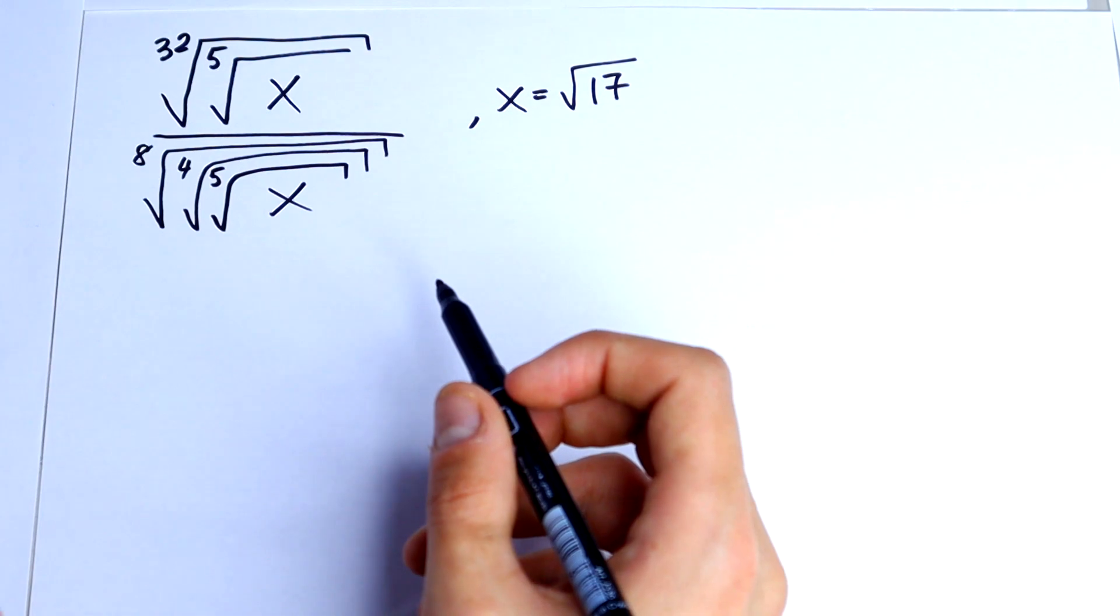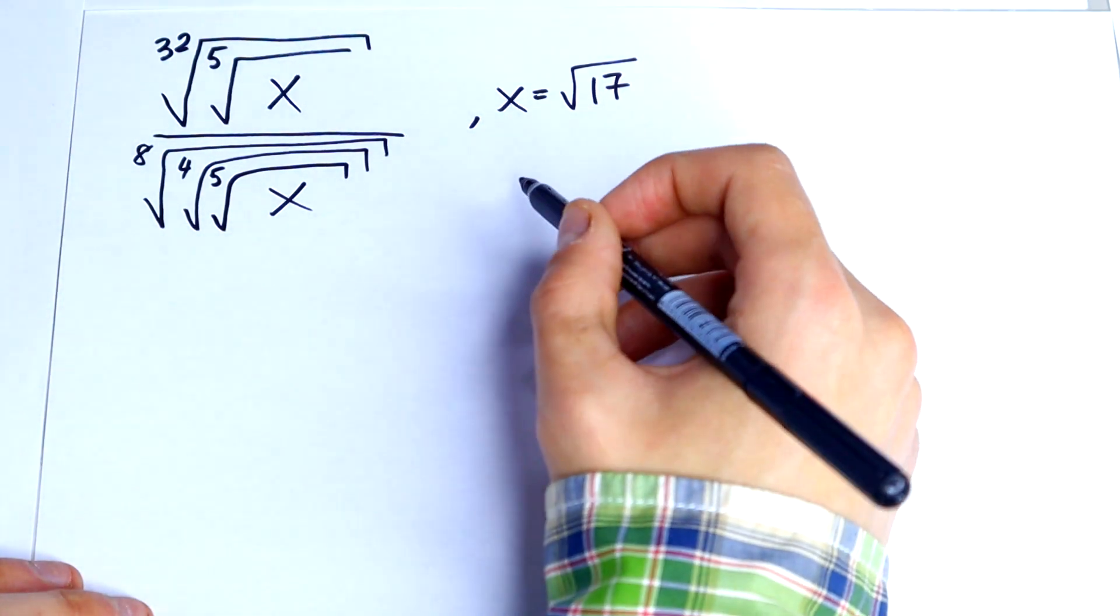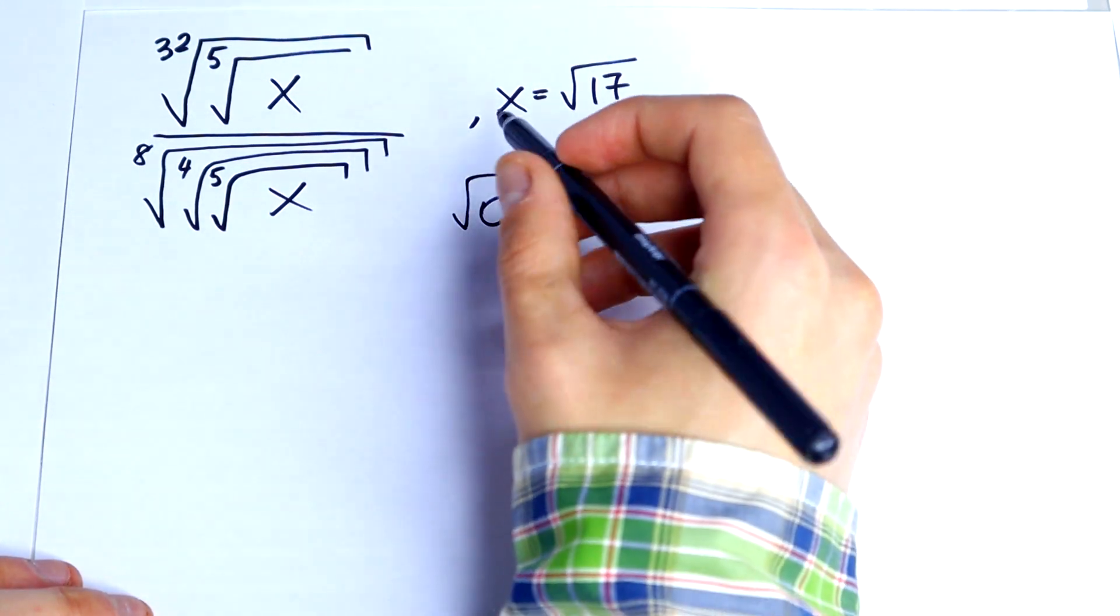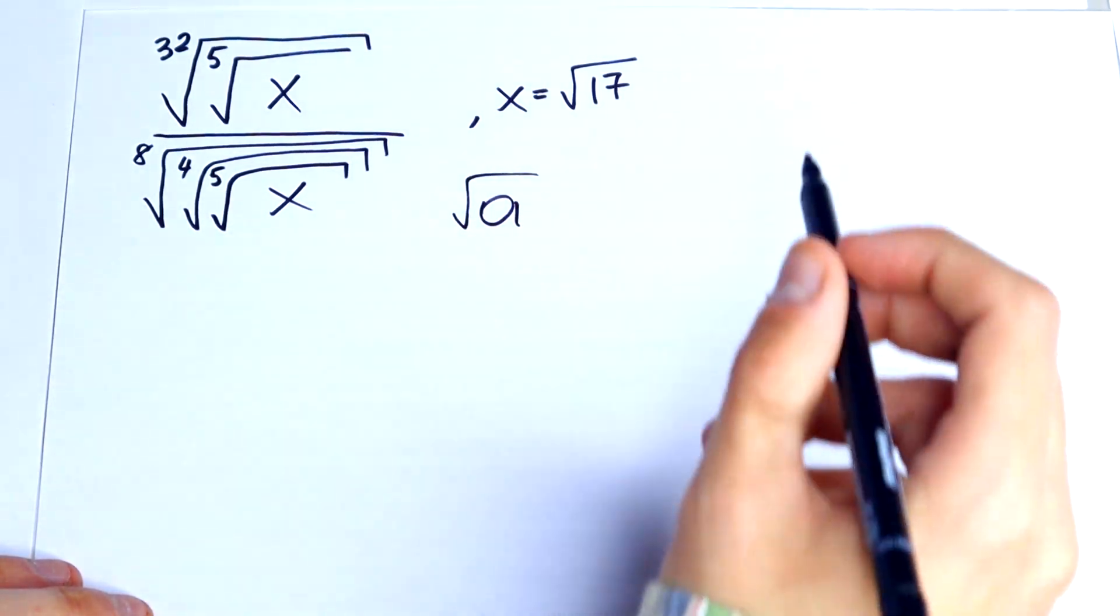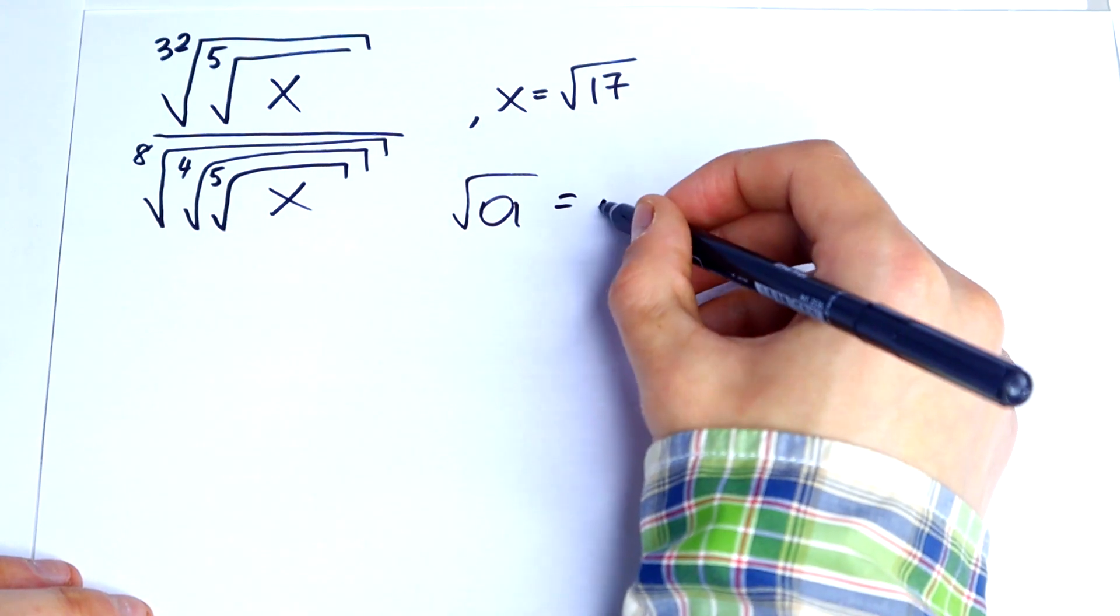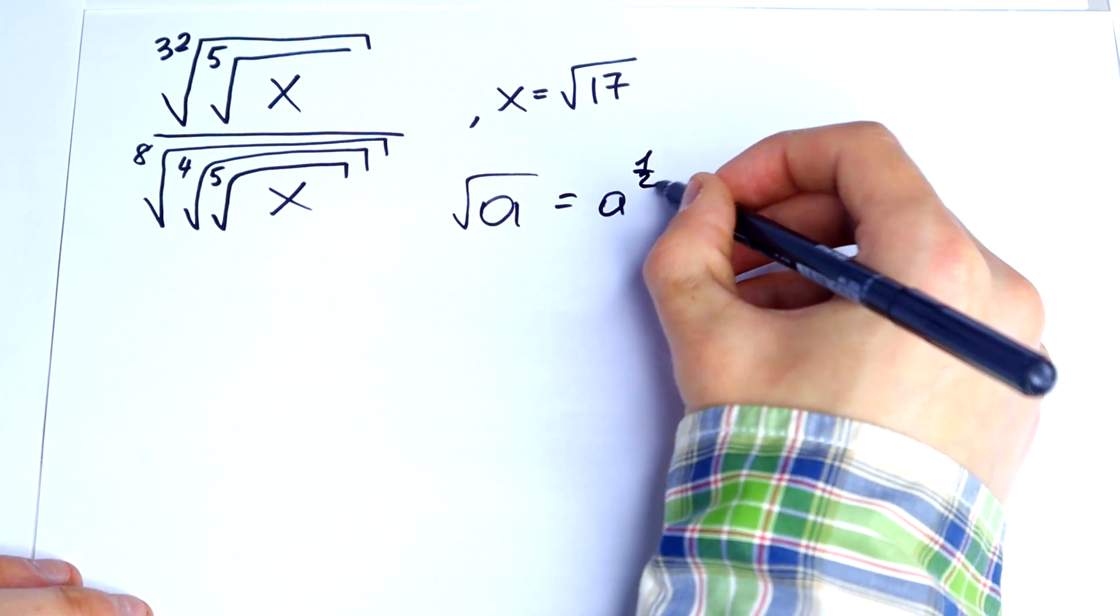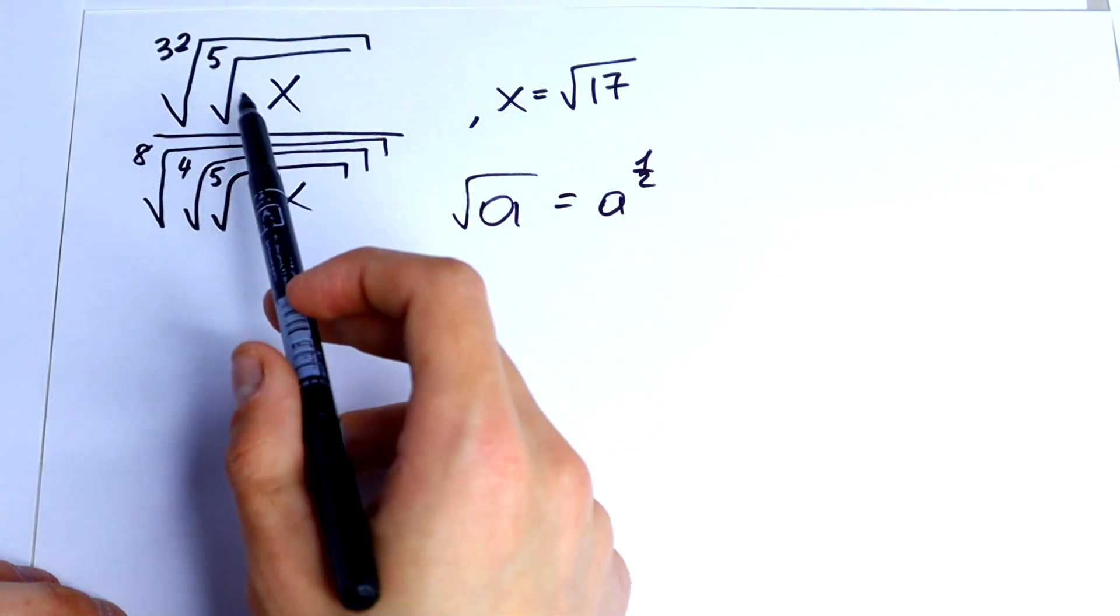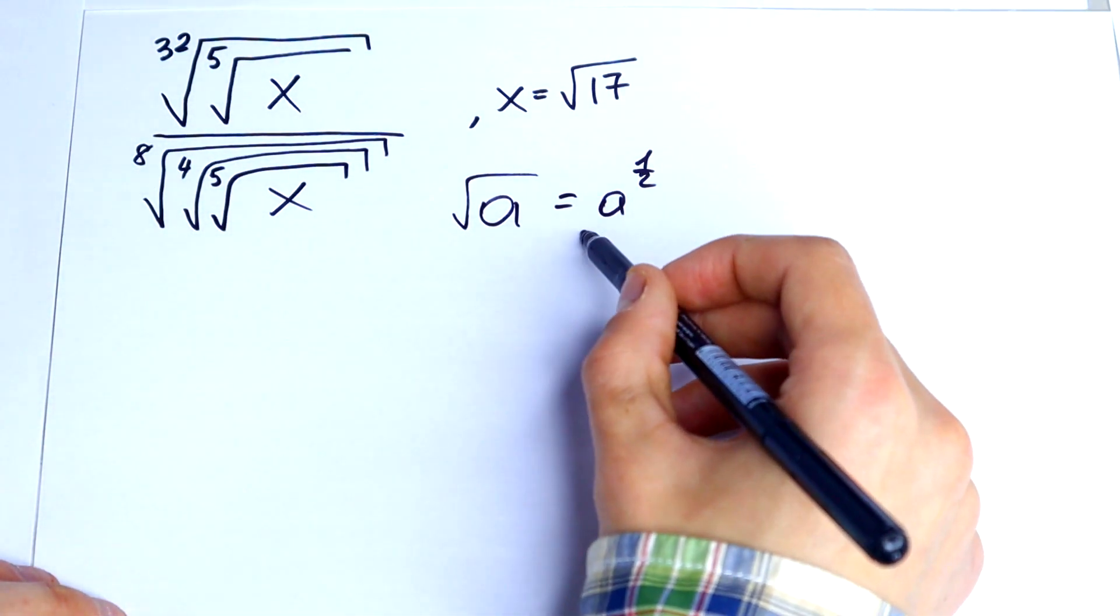We use one thing, a square root of a, it would be equal to a to the one and a half power. So we can rewrite this like that.